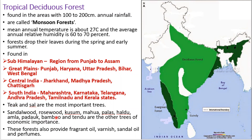Other important trees of economic importance are sandalwood, kuzum, mahua, palas, haldu, amla, bamboo, and tendu. These forests also provide fragrant oil, varnish, sandal oil, and perfumes.